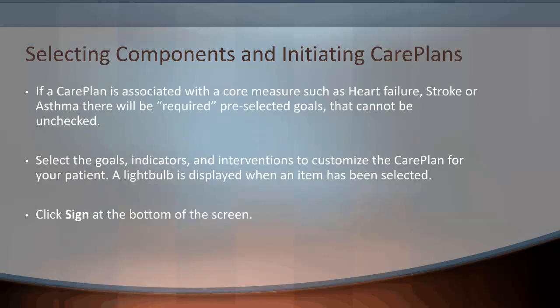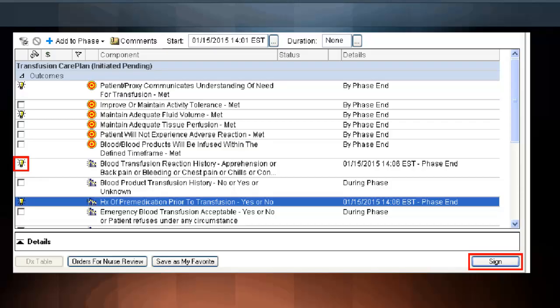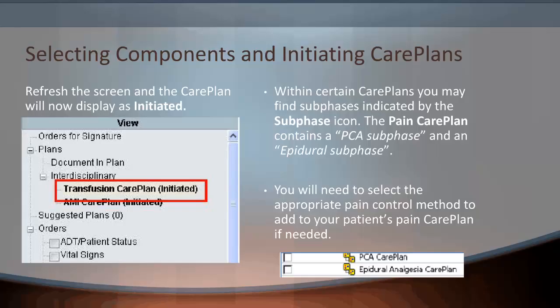A minimum of at least one goal is required for each care plan. If a care plan is associated with a core measure such as heart failure, stroke, or asthma, there will be a required pre-selected goal that cannot be unchecked. Select the goals, indicators, and interventions to customize the care plan for your patient. You will see a light bulb displayed when an item has been selected. Click the Sign button at the bottom of the screen. After refreshing the screen, the care plan will now display as initiated.